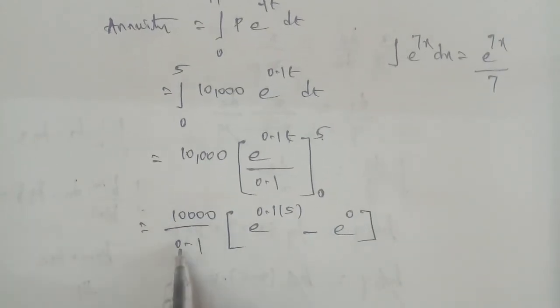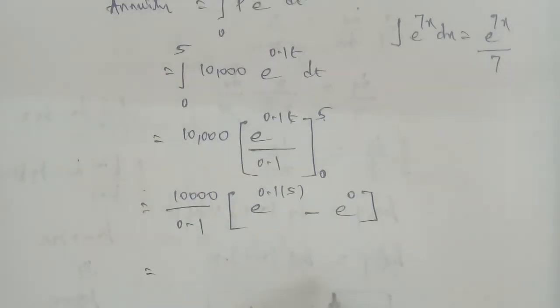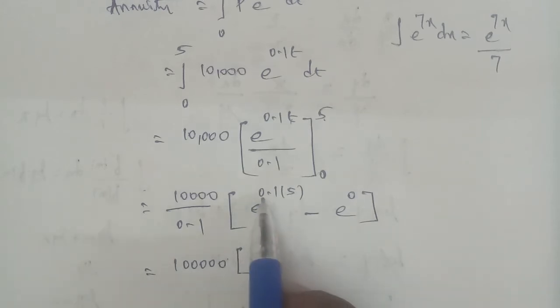Next, 10,000 divided by 0.1 is 1,00,000. Next, 0.1 times 5 is 0.5, that is e^0.5, and e^0 value is 1.